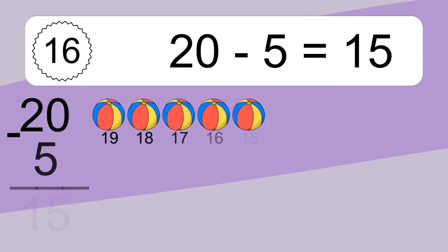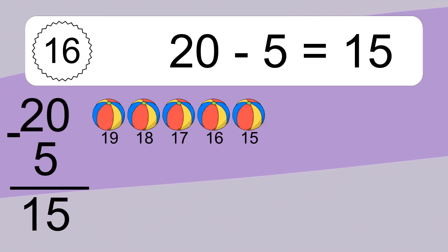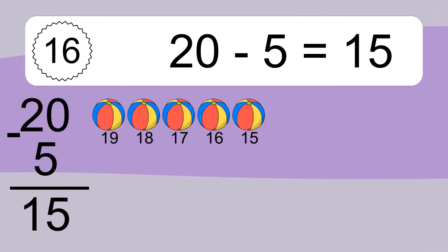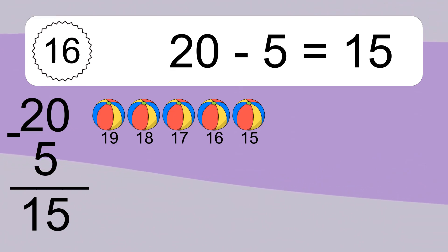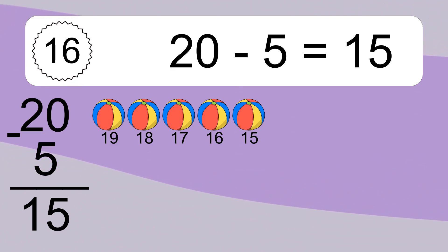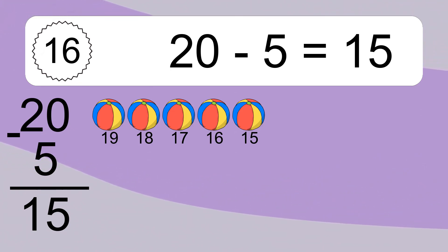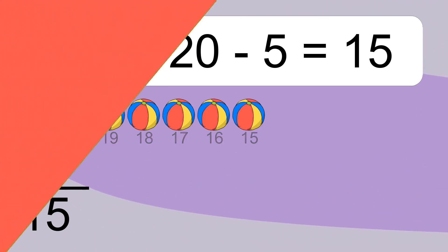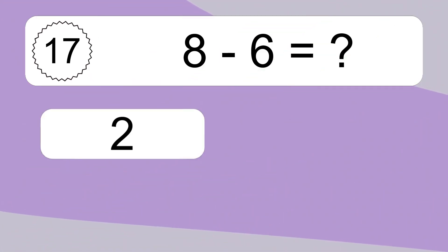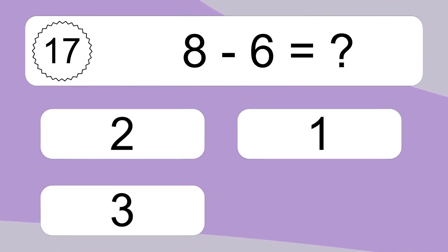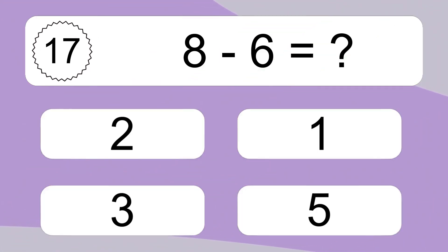20 minus 5 equals what? 20 minus 5 equals 15. Let's count it: 19, 18, 17, 16, 15.